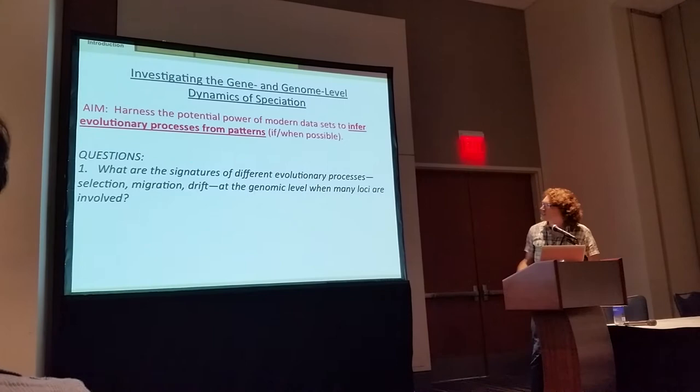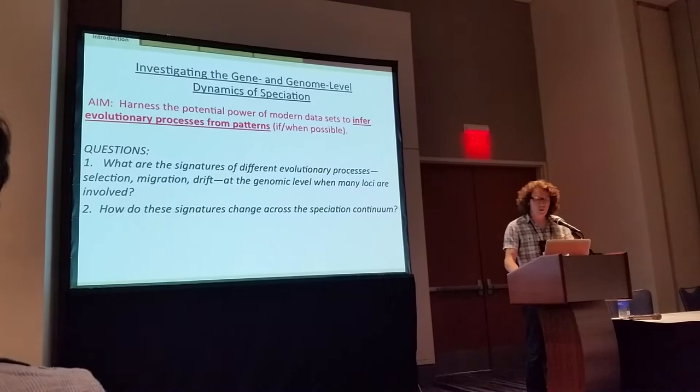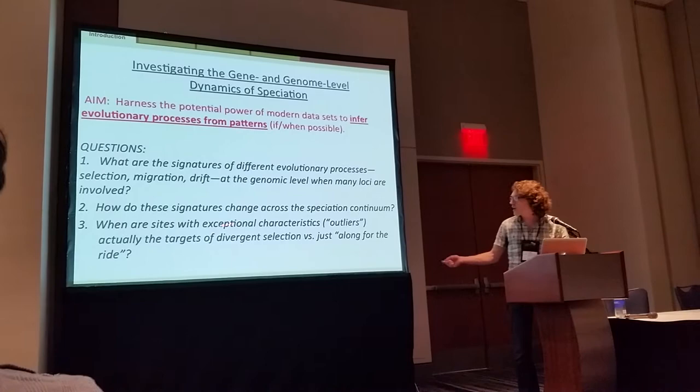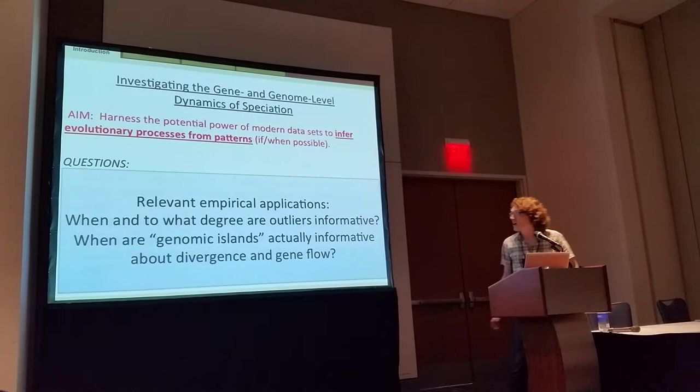One: what are the signatures of different evolutionary processes that are all interacting simultaneously at the genomic level when there may be many, many loci involved in the process of divergence? Secondly, how do these signatures change statistically across the speciation continuum? And when are sites with exceptional characteristics — things we might call outliers — actually the targets of divergent selection involved in reproductive isolation, versus when are they just along for the ride?